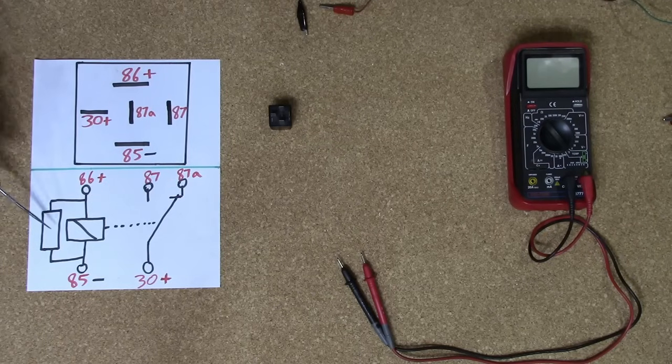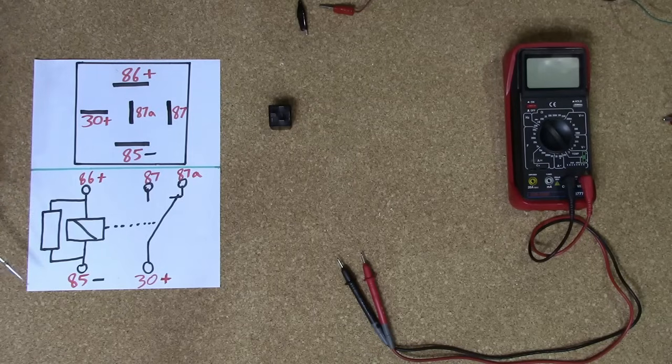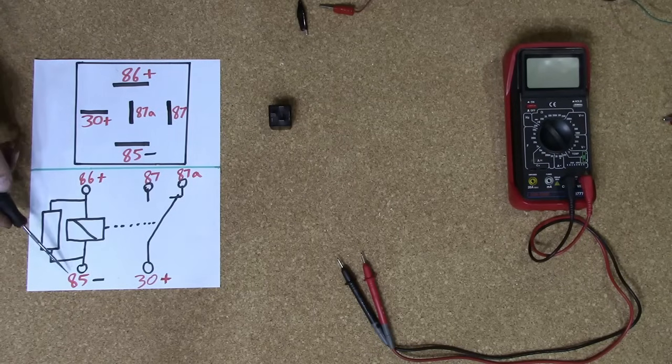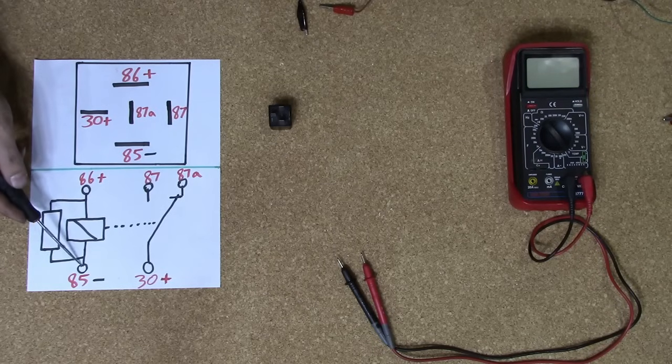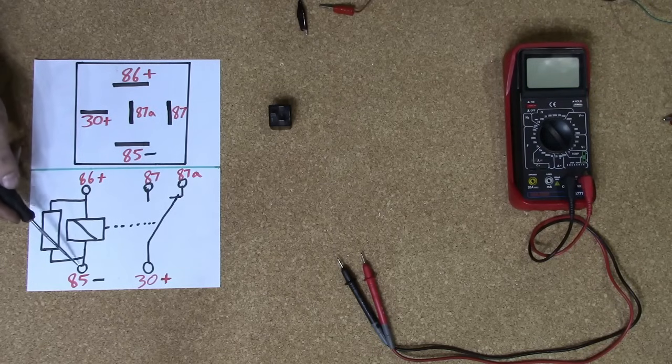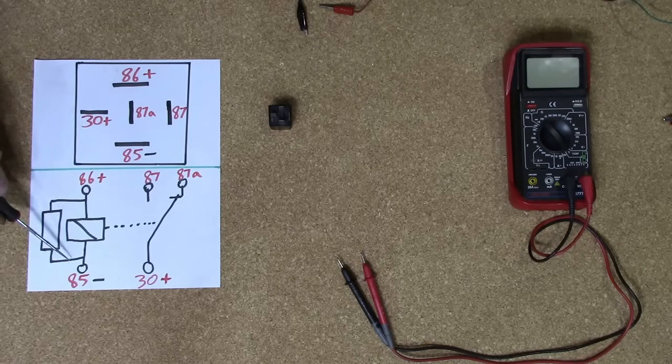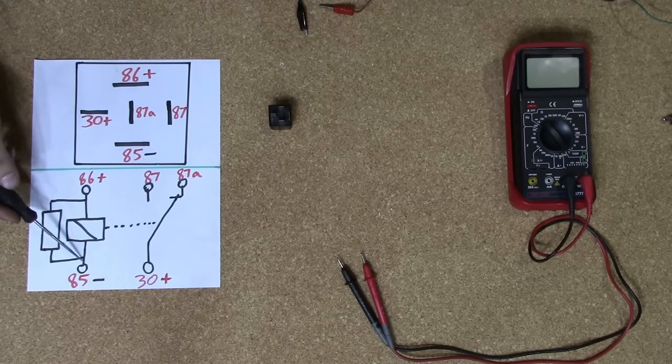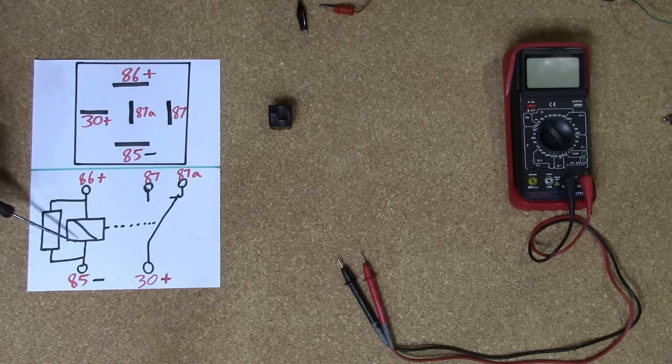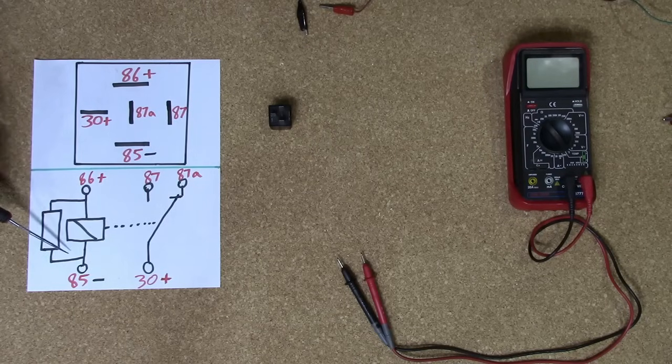In my last video, a lot of people asked, how do you know which pin is the ground and which one is positive? Well, usually speaking, number 85 is your ground pin. But if you don't have a diagram, it really doesn't matter which way you hook up your power supply. You can either hook it up to 86 and 85. And if you don't hear it click, just switch it around. And if you hear it click, then you go on to the next step.